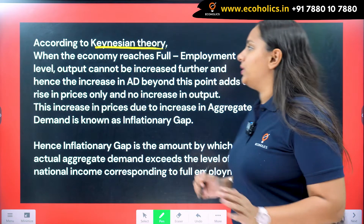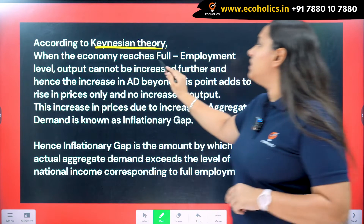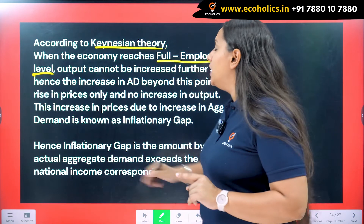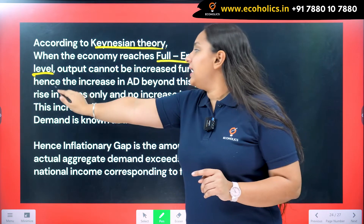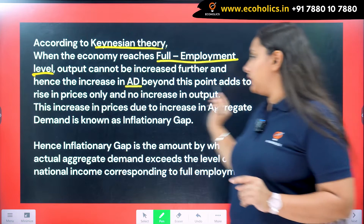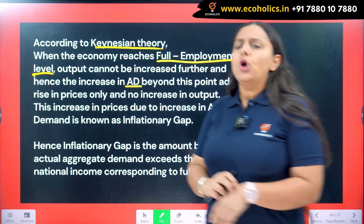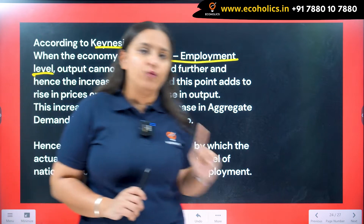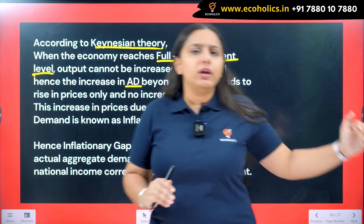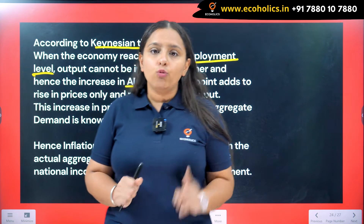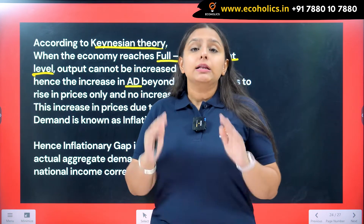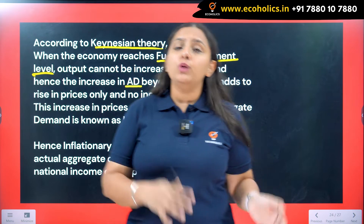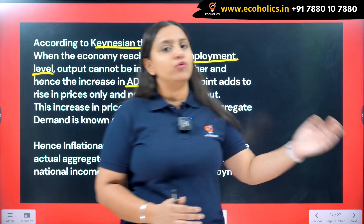Keynesian theory is a demand-determined theory. According to Keynesian theory, when the economy reaches full employment level, the output cannot be increased further, and hence the increase in aggregate demand beyond this point adds to rise in prices only. Keynes believed in rigidity in prices as well as wages, and because of that rigidity you never reach full employment level — unlike what classicals believed, since according to classicals the economy is always at full employment level.